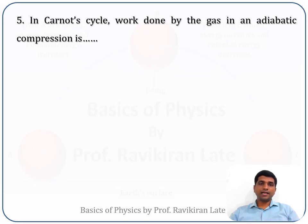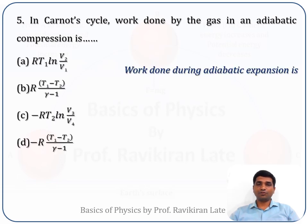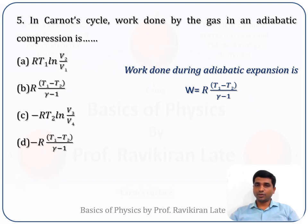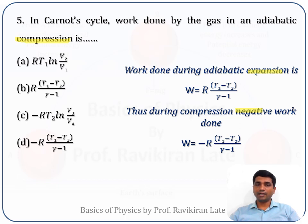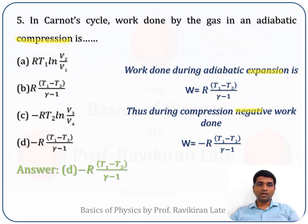The fifth question: in the Carnot cycle, work done by the gas in adiabatic compression is — options given. Work done during adiabatic expansion is W equals R times (T1 minus T2) divided by (gamma minus 1). During compression, the work done is the negative of expansion. Therefore, work done during adiabatic compression is minus R(T1 minus T2) divided by (gamma minus 1). The correct answer is option D.